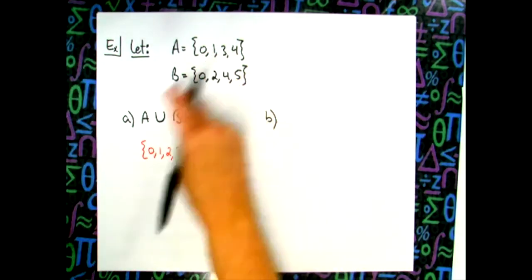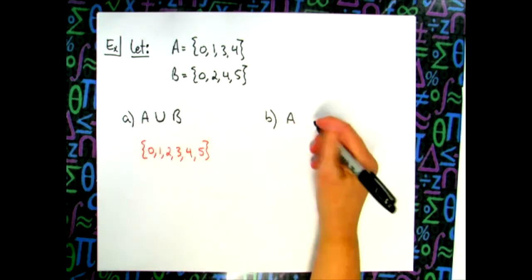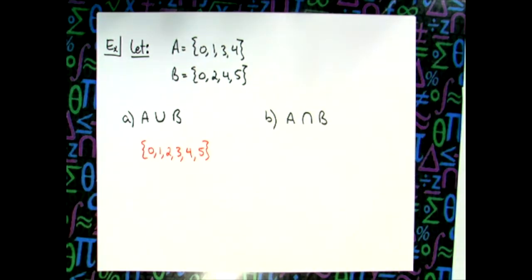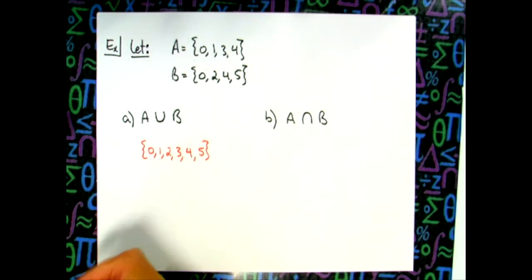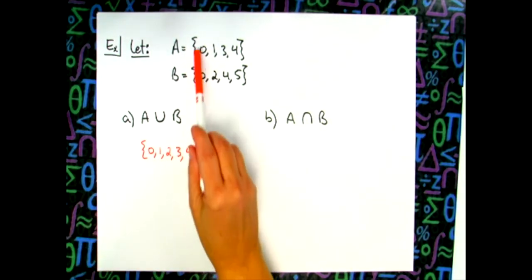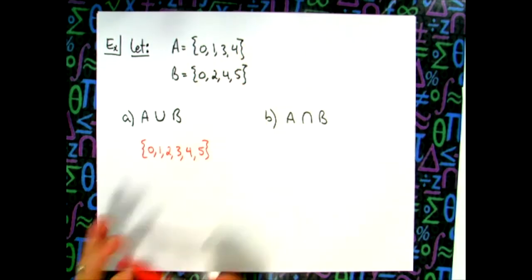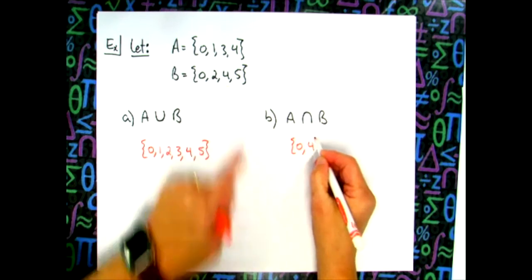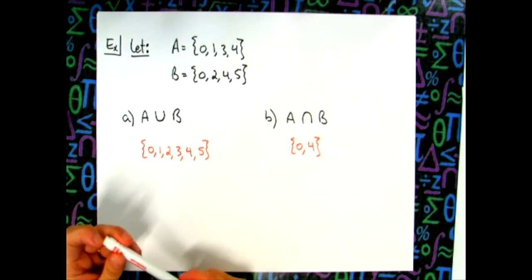For part B, find A intersect B — what numbers are in both sets? Zero is in both, and four is in both. So the intersection is {0, 4} — the numbers that overlap and appear in both sets.